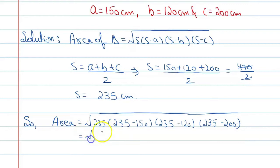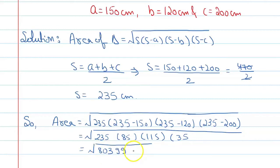So it is equal to under root 235 times 85 times 115 times 35. Now when we multiply the values together, it gives us 80,399,375.